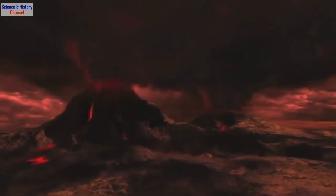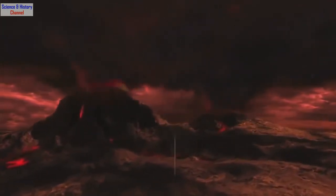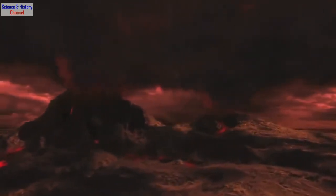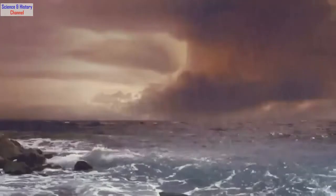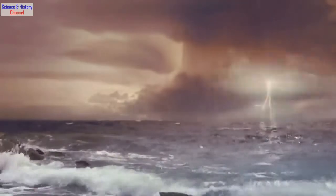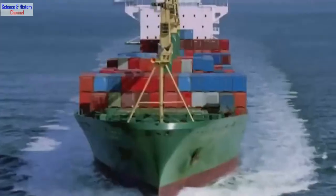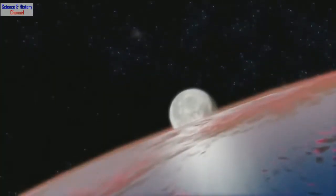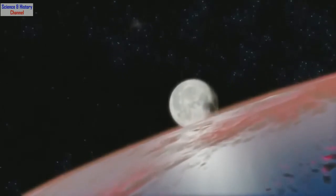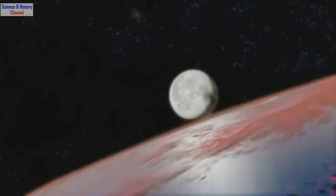For millions of years, as the planet cools, rain pours down, forming puddles, lakes, and eventually our oceans. By 3.8 billion years ago, our planet has a moon and permanent oceans.